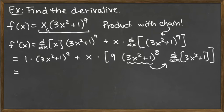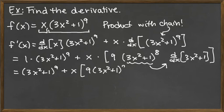So let's keep going here. We don't have to have the 1 times, so we can just write 3x squared plus 1 raised to the 9th power. And then we can have plus x times 9 times 3x squared plus 1 to the 8th power. And then we'll take this derivative of 3x squared plus 1.